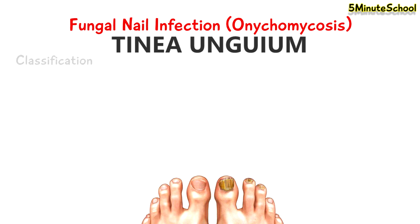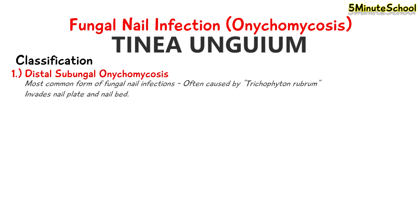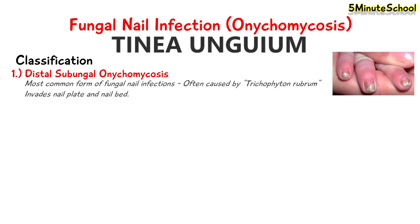We can classify fungal nail infections based on the type of infection or its appearance. One type is called distal subungual onychomycosis, and this is the most common form of fungal nail infections, often caused by the fungus Trichophyton rubrum. It invades the nail bed and under the nail plate.